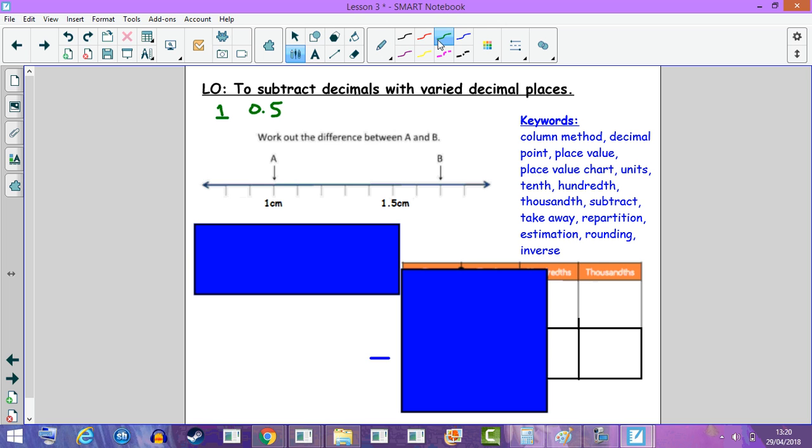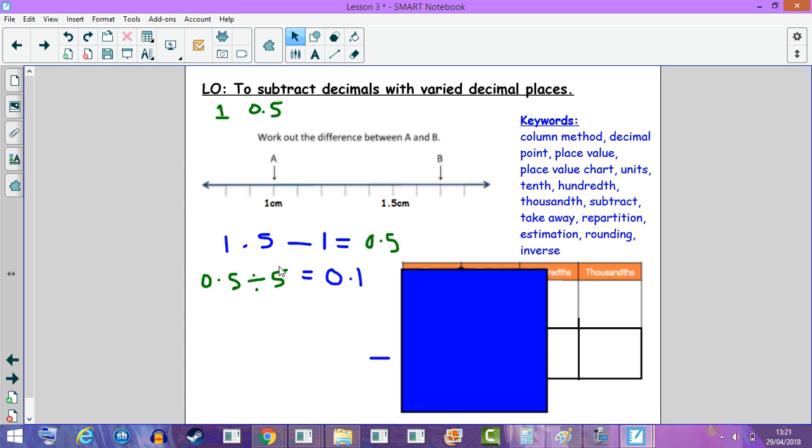Or we could find the difference between 1 and 1.5, which is 0.5. This whole jump is 0.5. And then we can divide 0.5 by the 5 little lines, which would give us 0.1. Each little line is worth 0.1. So our jumps are 1.1, 1.2, 1.3, 1.4, and we've reached 1.5. So it must be the jumps of 0.1.